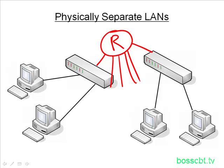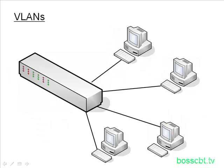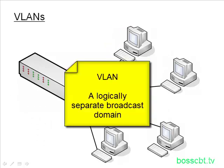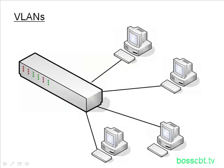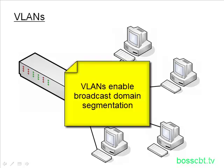One good solution — the solution we're going to talk about — is using VLANs to address this. A VLAN is a logically separate broadcast domain. If a LAN, a flat network, is a single broadcast domain, well, a virtual LAN is just that as well — it's a single broadcast domain. VLANs allow you to segment your network in terms of broadcast domains, and this can become very useful.